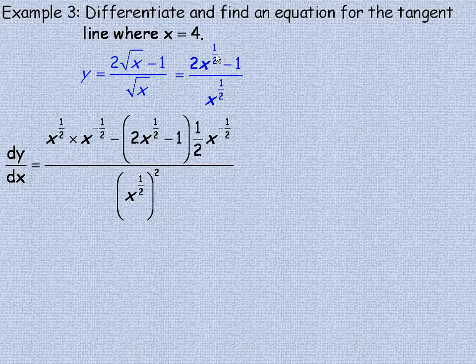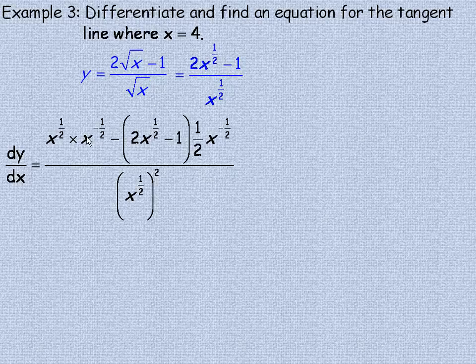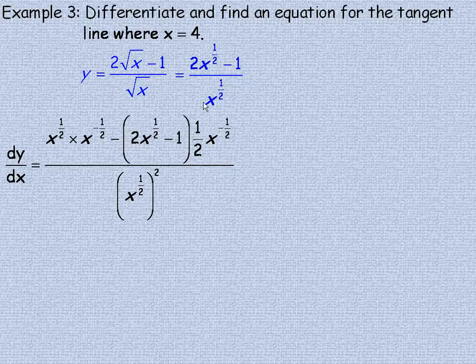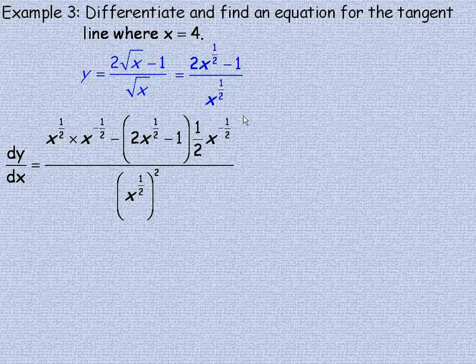And then we subtract 1 from the exponent. A half minus 1 is negative a half. Minus the original numerator times the derivative of the denominator. The derivative of x to the half is a half x to the negative half, just using the power rule. And then over the original denominator squared.